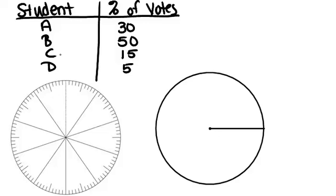We could represent this with a pie chart, which would be a nice visual way to see how many more votes student B got compared to the others.